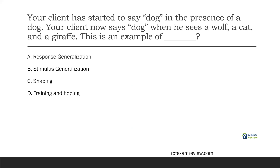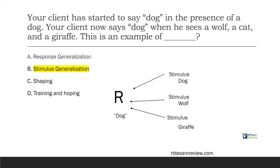A couple more questions. Your client has started to say 'dog' in the presence of a dog. Your client now says 'dog' when he sees a wolf, a cat, and a giraffe. What is this an example of — response generalization, stimulus generalization, shaping, or training and hoping? It's not training and hoping because we're not just training anything. Our client has now started to generalize. They learned 'dog,' and now they see a wolf, cat, and giraffe and say 'dog' in all these situations. We're generalizing. So is this multiple responses or multiple stimuli? We have multiple stimuli — wolf, cat, and giraffe — therefore it's stimulus generalization.